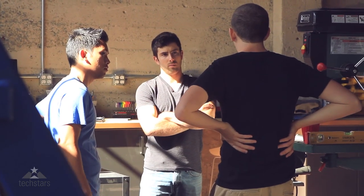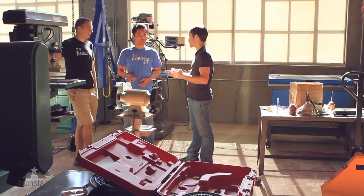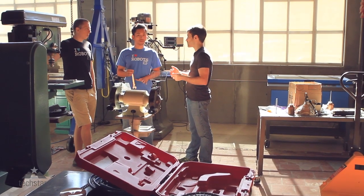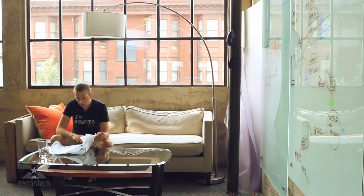Building hardware has been super hard. It turns out that hardware is expensive and slow. So we switched from building the robots ourselves to manufacturing with this current generation of Romo which was designed in early 2012.